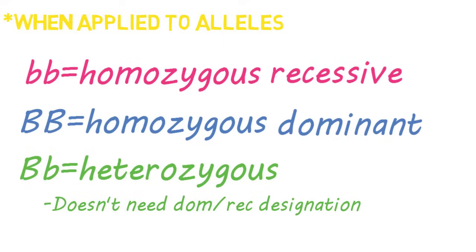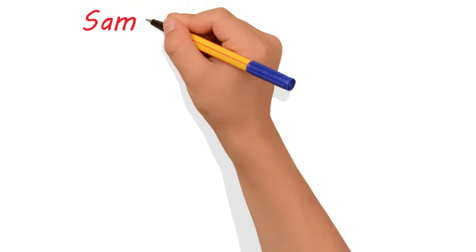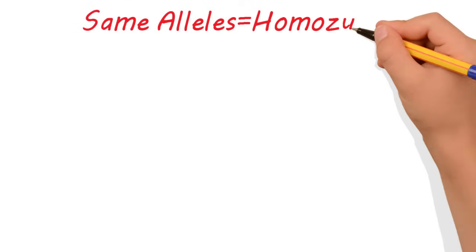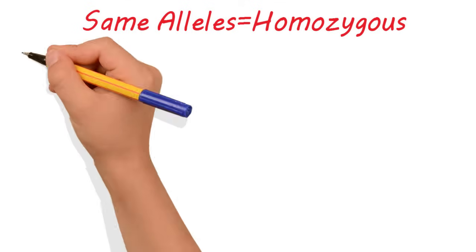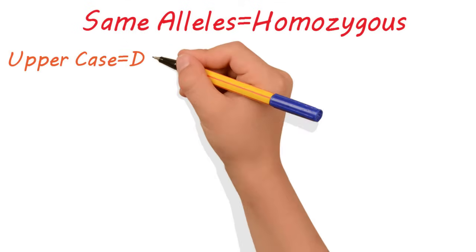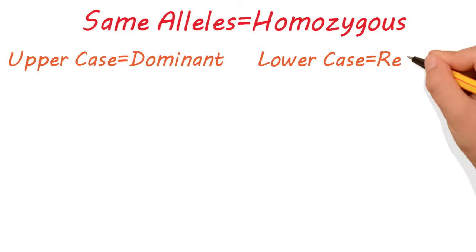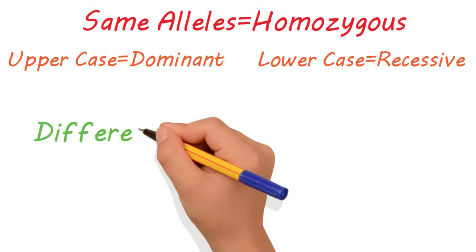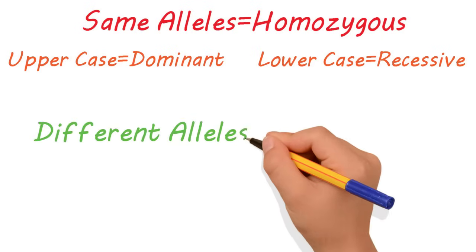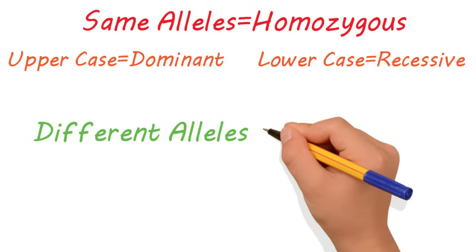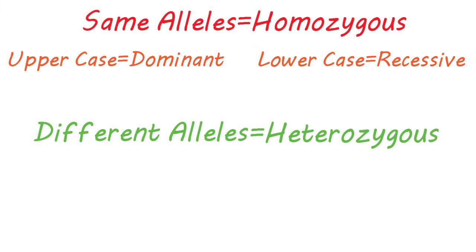Let's do a quick recap. In dominant versus recessive alleles, if the two alleles are the same, the alleles are homozygous — the uppercase being homozygous dominant and the lowercase being homozygous recessive. If the two alleles are different, one uppercase, one lowercase, then it's heterozygous. Just heterozygous.